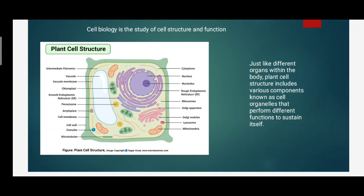Let's discuss each unit one by one. Unit first is on cell biology, which is the study of structures and functions. Before starting, what is a cell? For example, when writing a story, there are different sentences; in sentences there are different words; in words there are different alphabets. In the same way, in plant cell structure there are different plant organs, and those plant organs are made by different cell organelles.